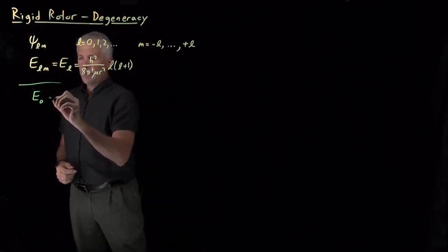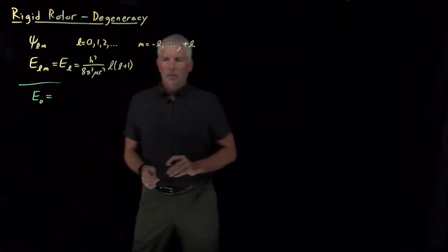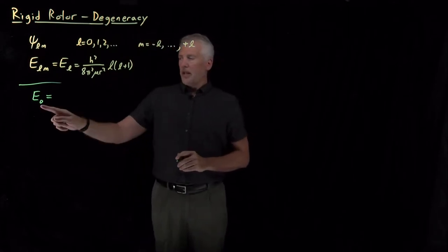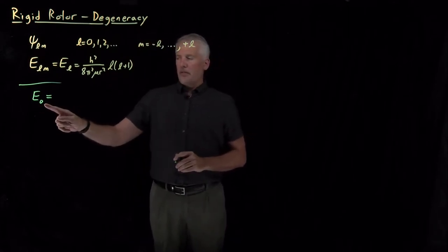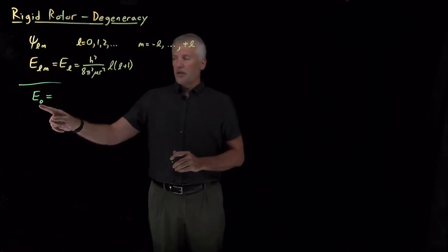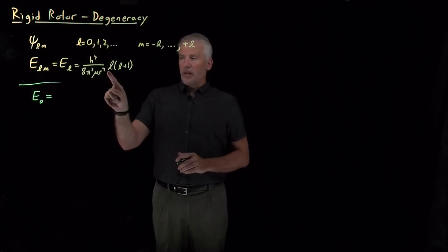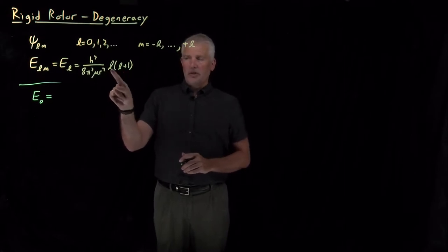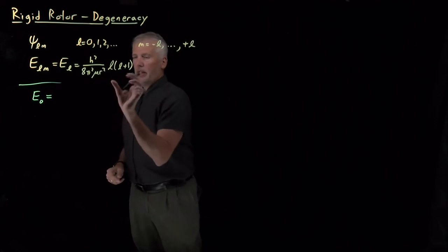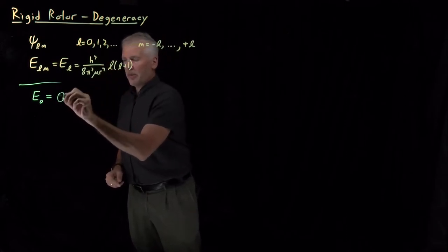We've already seen, for example, but now we can use this formula to double-check. If L is equal to 0, the energy of the 0-0 wave function, L equals 0, M equals 0, if I plug in L equals 0 into these two places, 0 times 1 is 0, and that 0 times these constants gives me 0.